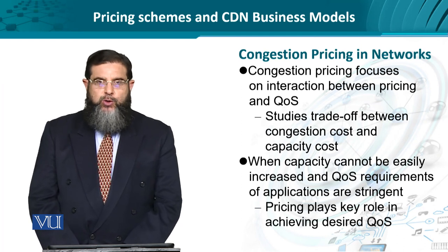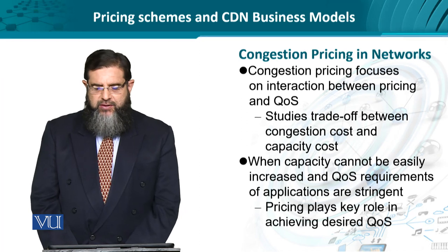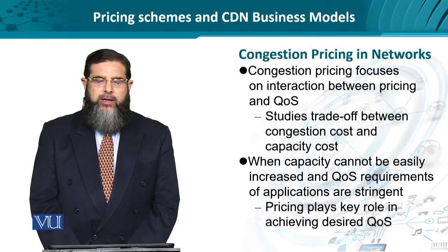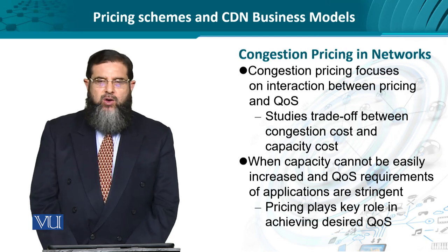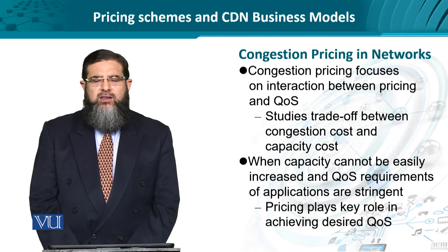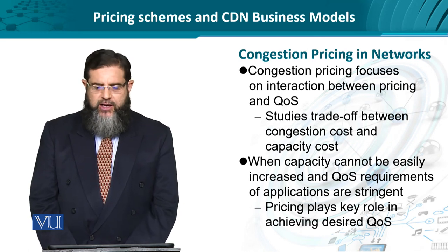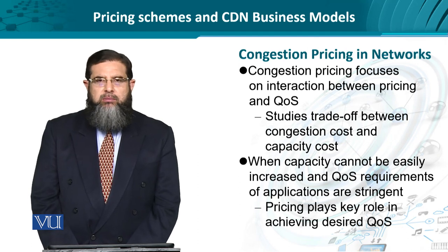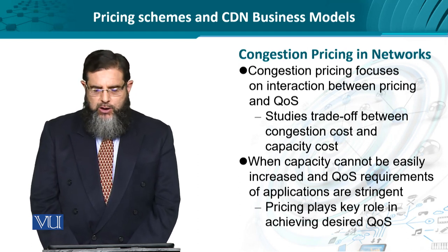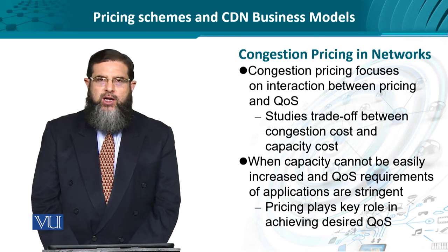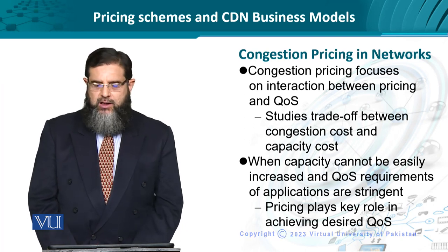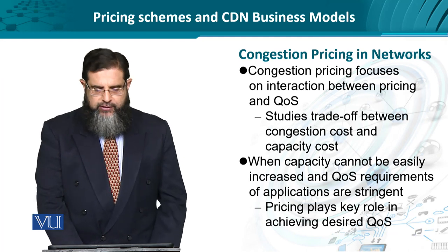The user or content provider is interested in maximizing QoS at minimum price. But for the content delivery network, when capacity is fixed and cannot be increased indefinitely, and QoS requirements from the content provider become increasingly stringent, price becomes the factor that could possibly manipulate the interaction — the business bargain — between the content provider and the content delivery network.